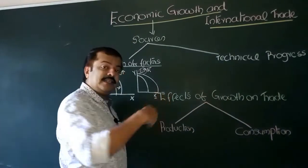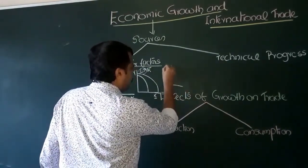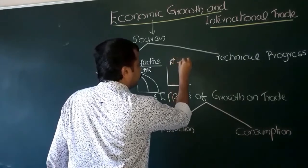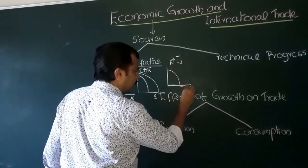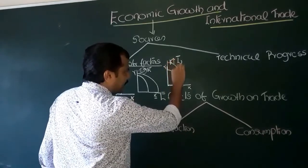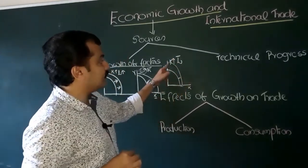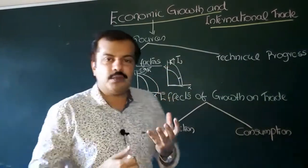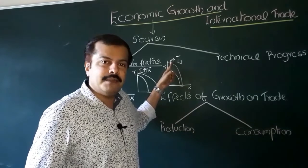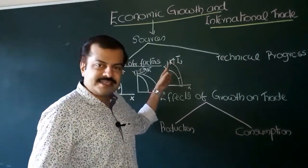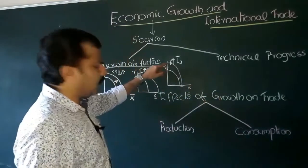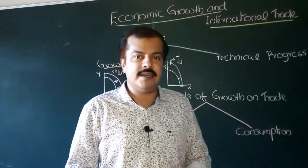Now let us see the opposite case — labor remaining constant and capital increases. Given the initial production possibility curve with commodity X on one axis and commodity Y on the other, if capital increases, the production possibility will shift towards the right with more bias towards commodity Y, because commodity Y is a capital-intensive commodity. So there will be an asymmetrical shift towards commodity Y when only the endowment of capital increases.